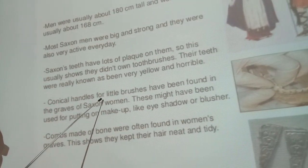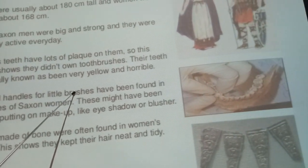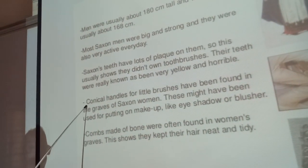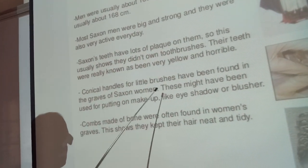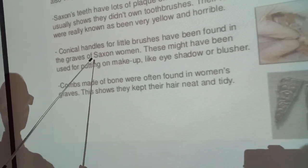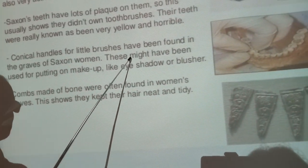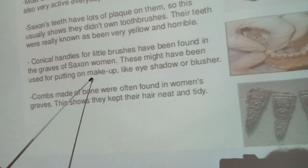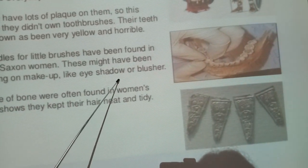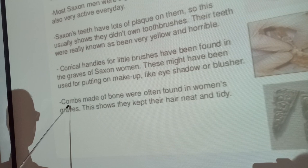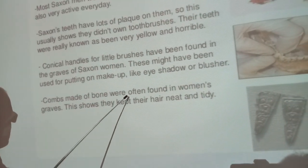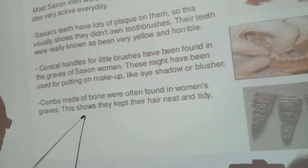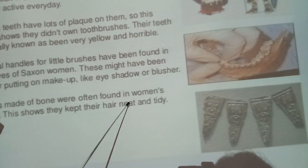Conical handles for little brushes have been found in the graves of Saxon women — this might have been used for putting on makeup like eyeshadow or blusher. Combs made from bone were often found in women's graves, suggesting they kept their hair neat and tidy.